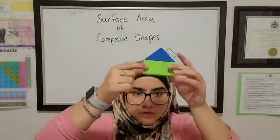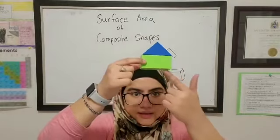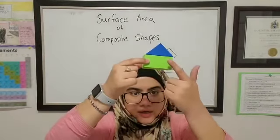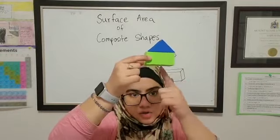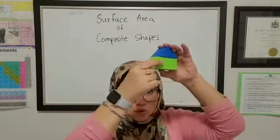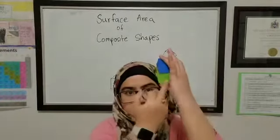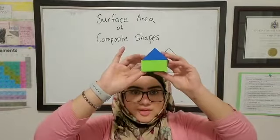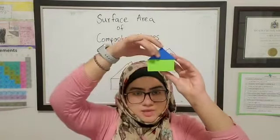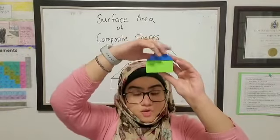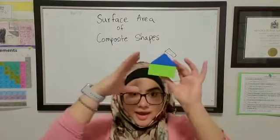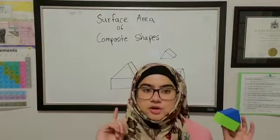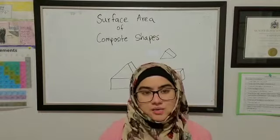For the bottom rectangular prism part, you have three identical faces — front, back, and one more — so if you know the area of the front face (length times width), multiply by three. Then find the area of the two side faces and multiply by two. Once you know the area of all five faces of the rectangular prism and four faces of the triangular prism, add them all up and that's your surface area for the composite shape.